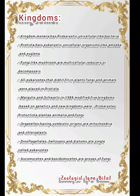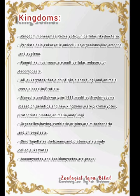Organisms having symbiotic origins are mitochondria and chloroplasts. Examples include dinoflagellates, halogens, diatoms, etc., which are single eukaryotic cells. Ascomycetes and Basidiomycetes are groups of fungi. An important MCQ in this topic is: which are multicellular reducers or decomposers? Also remember that Margulis and Schwartz modified the five kingdoms based on genetics, and the new kingdoms were prokaryotes, Protoctista, Plantae, Animalia and Fungi.